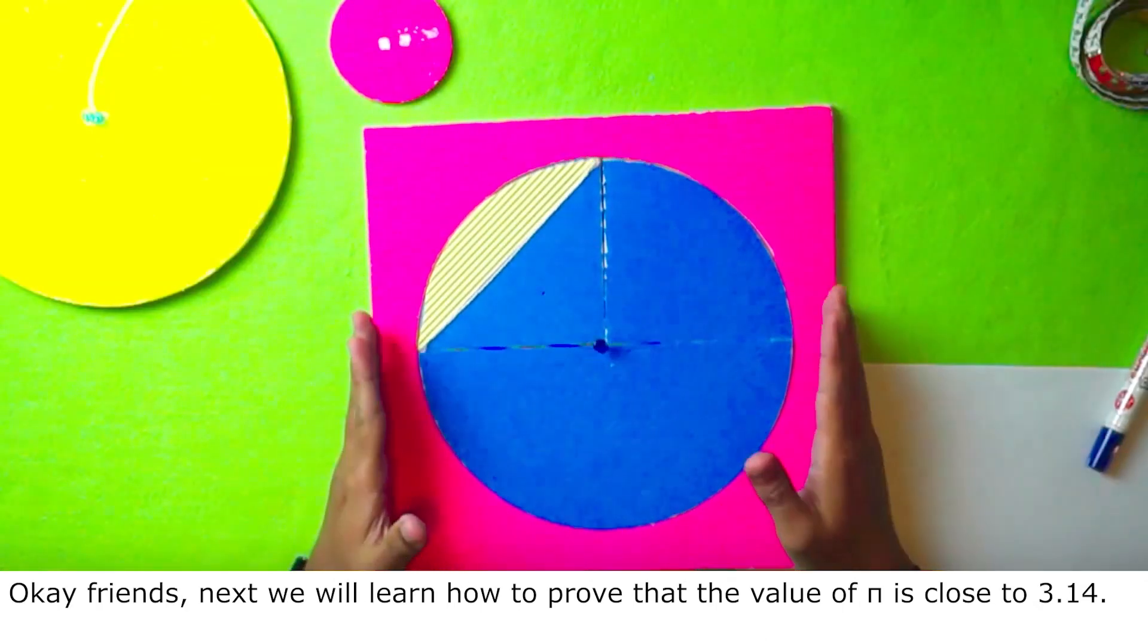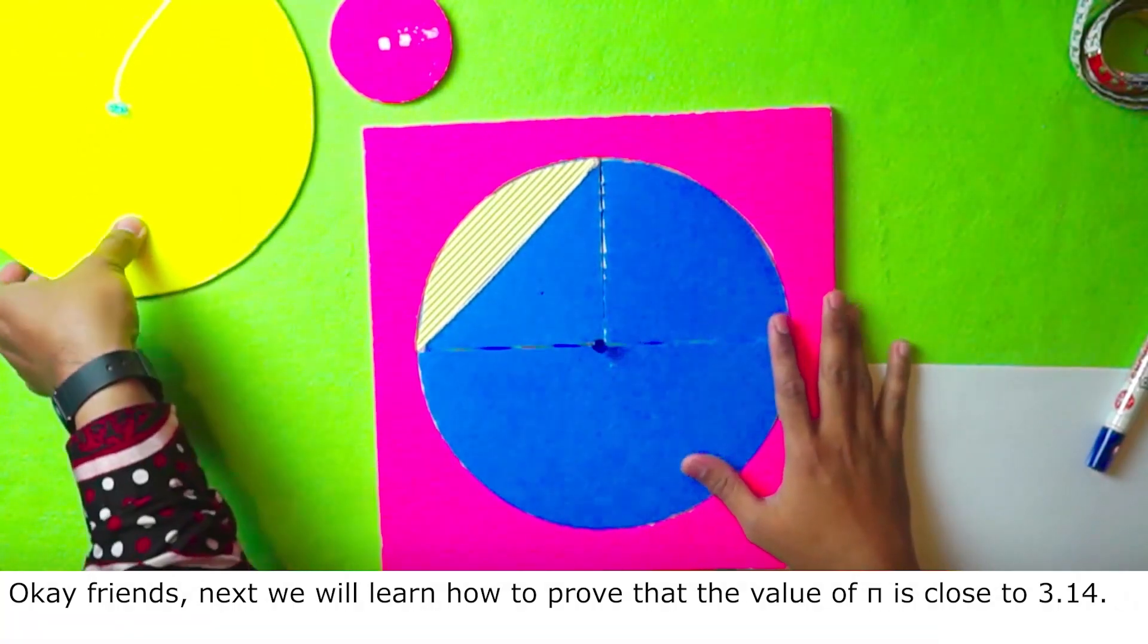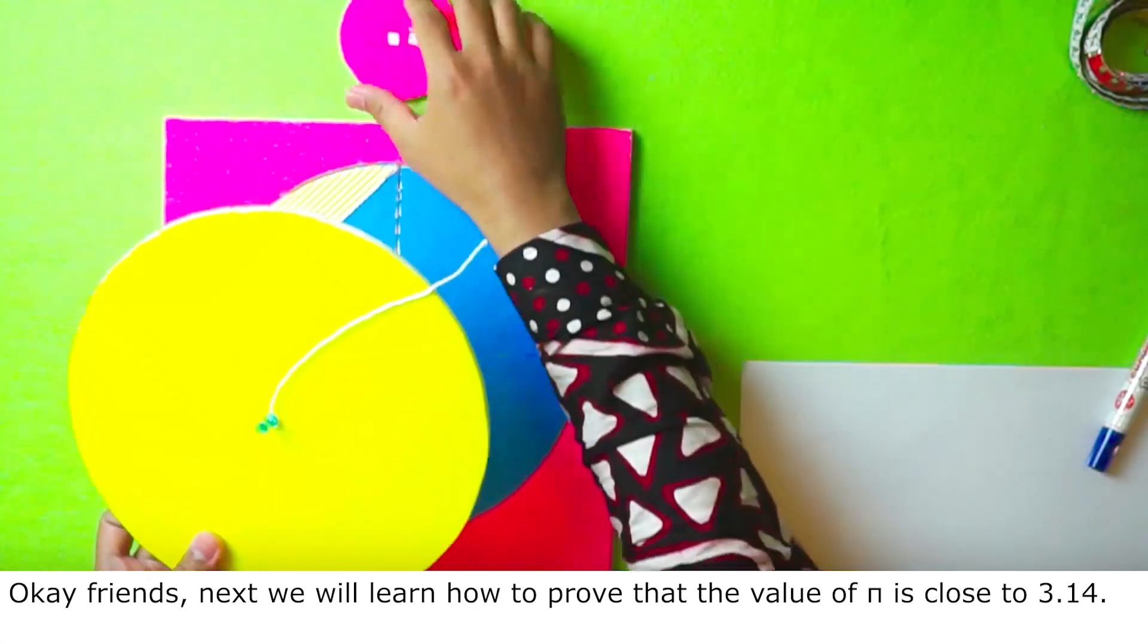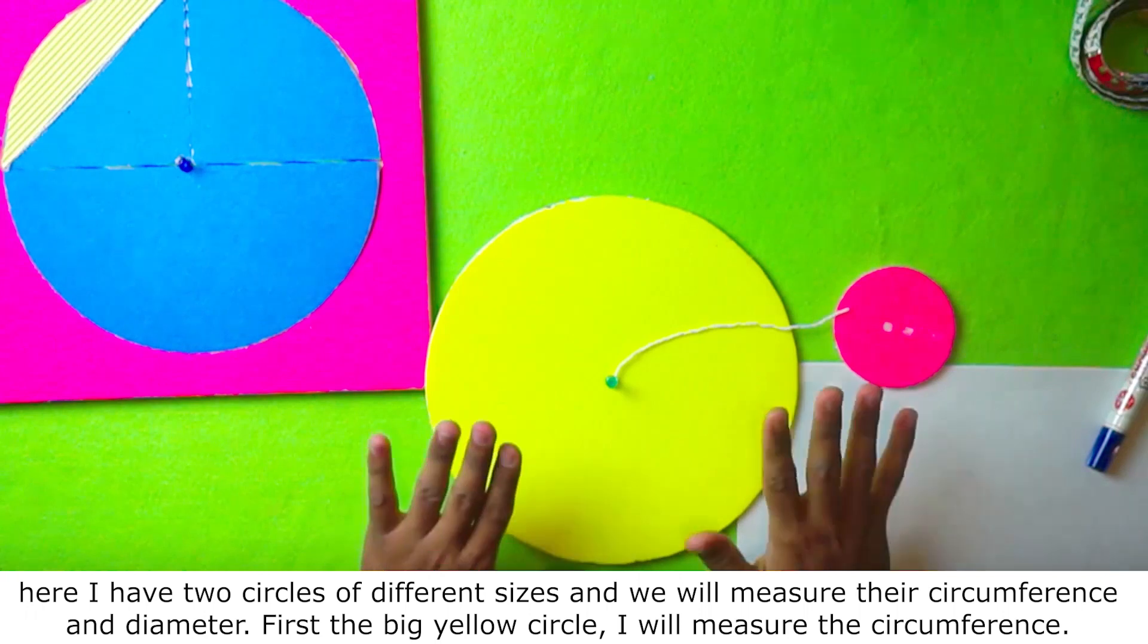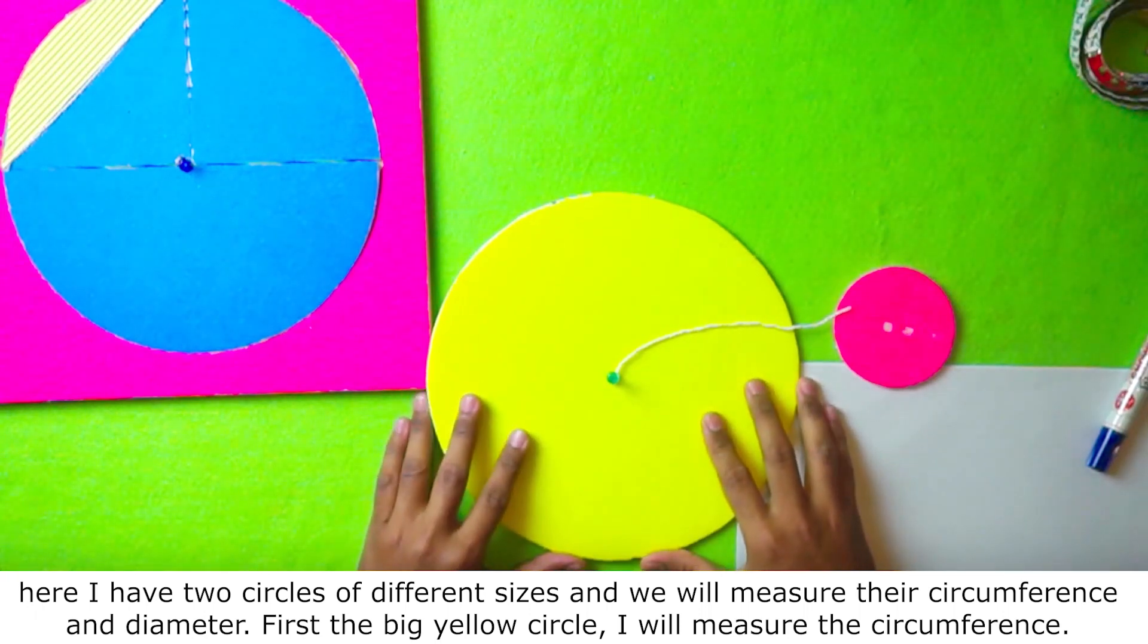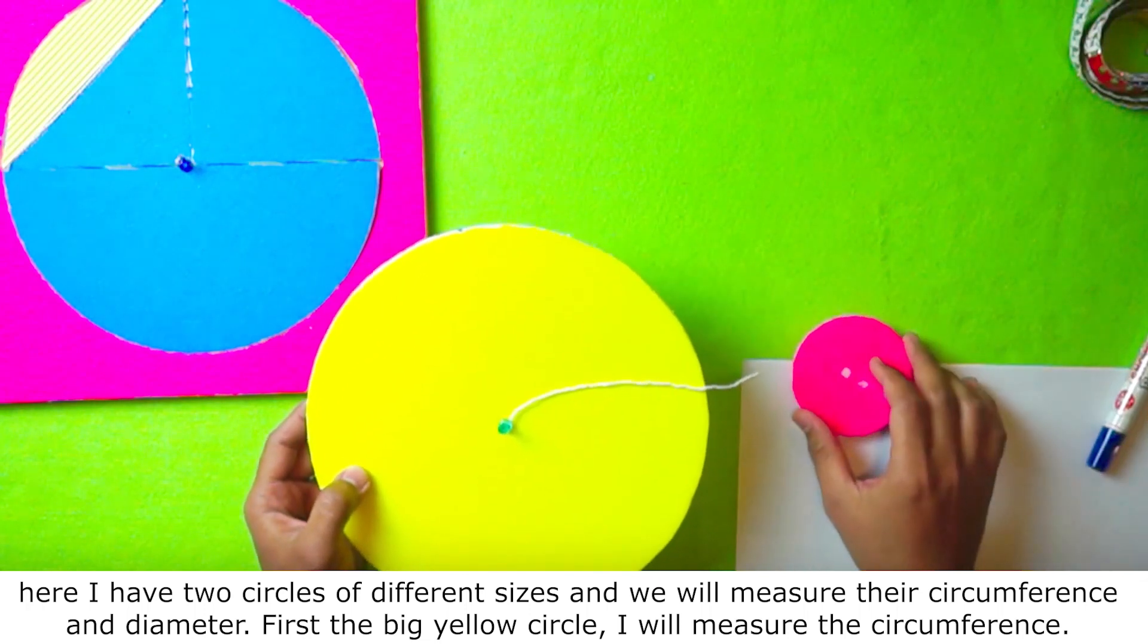Okay friends, next we will learn how to prove that the value of pi is close to 3.14. Here, I have two circles of different sizes and we will measure their circumference and diameter. First, the big yellow circle. I will measure the circumference.